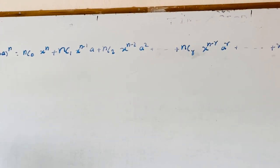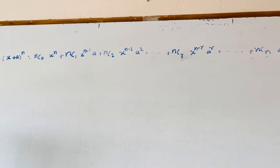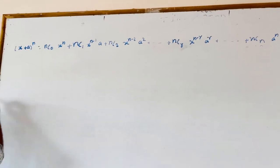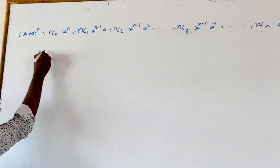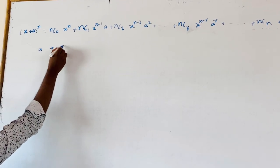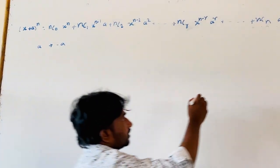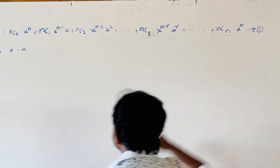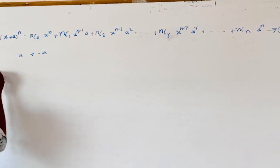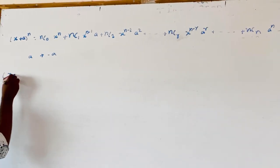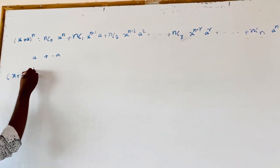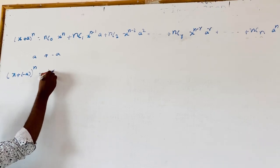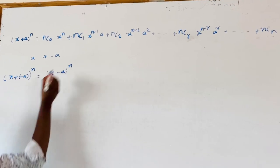Now we discuss the expansion of (x - a)^n. We derive the expansion of (x - a)^n by replacing a with minus a in equation 1. So x plus a all power n with a replaced by minus a gives us x minus a all power n.